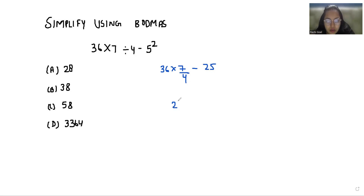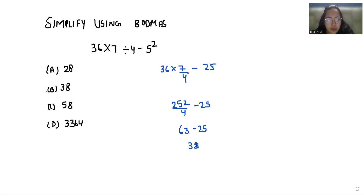36 × 7 = 252, so we get 252 / 4 − 25. Now 252 / 4 = 63, and 63 − 25 = 38. That is option number P. I hope it's clear and you find it useful, so please give us a thumbs up.